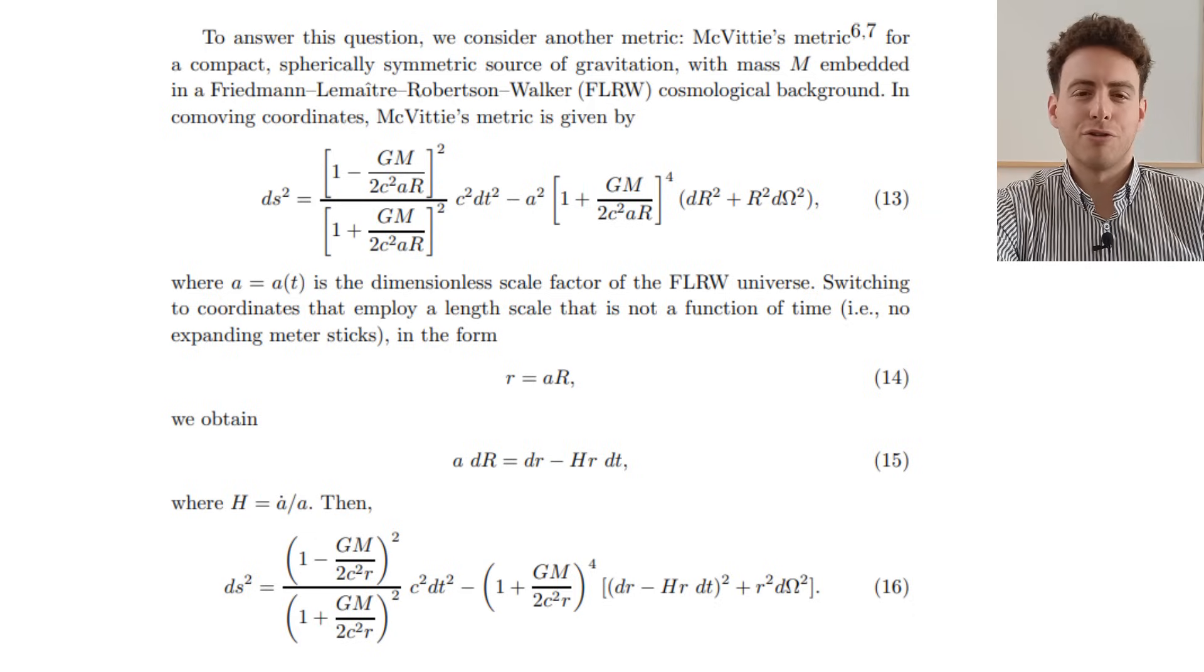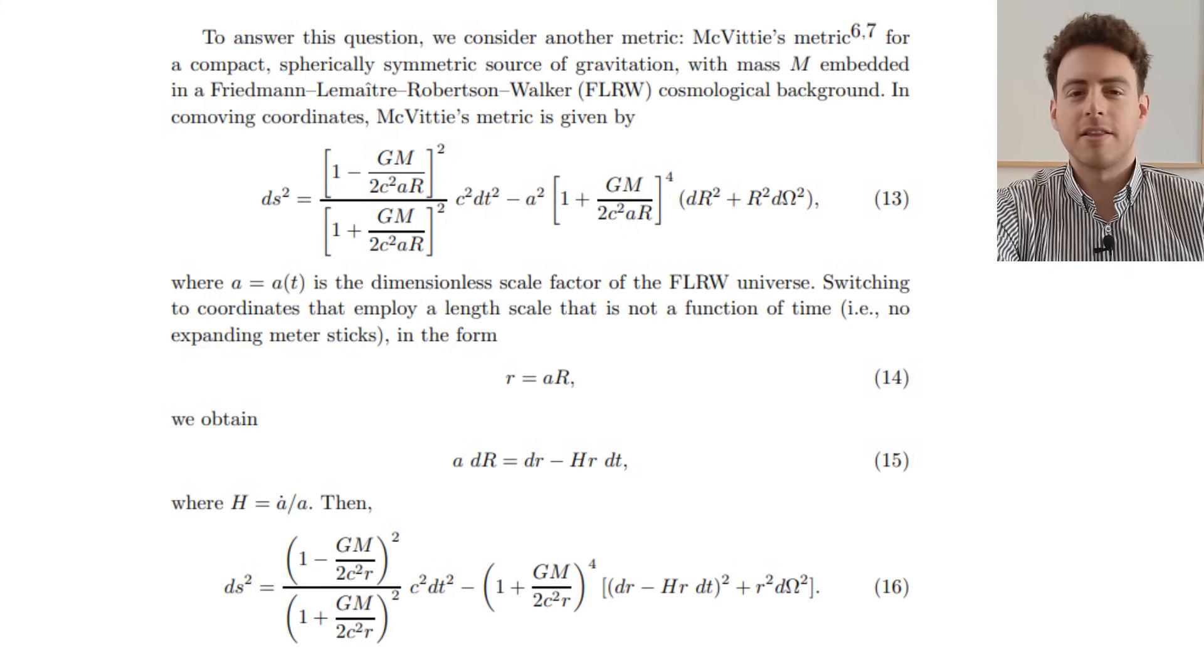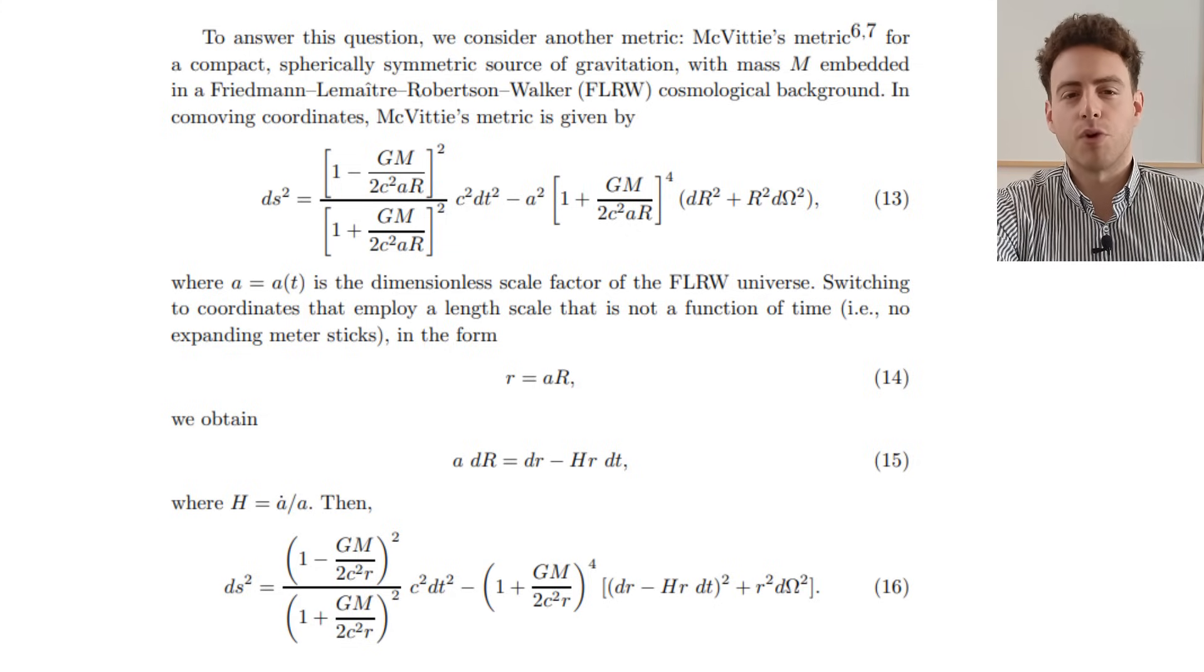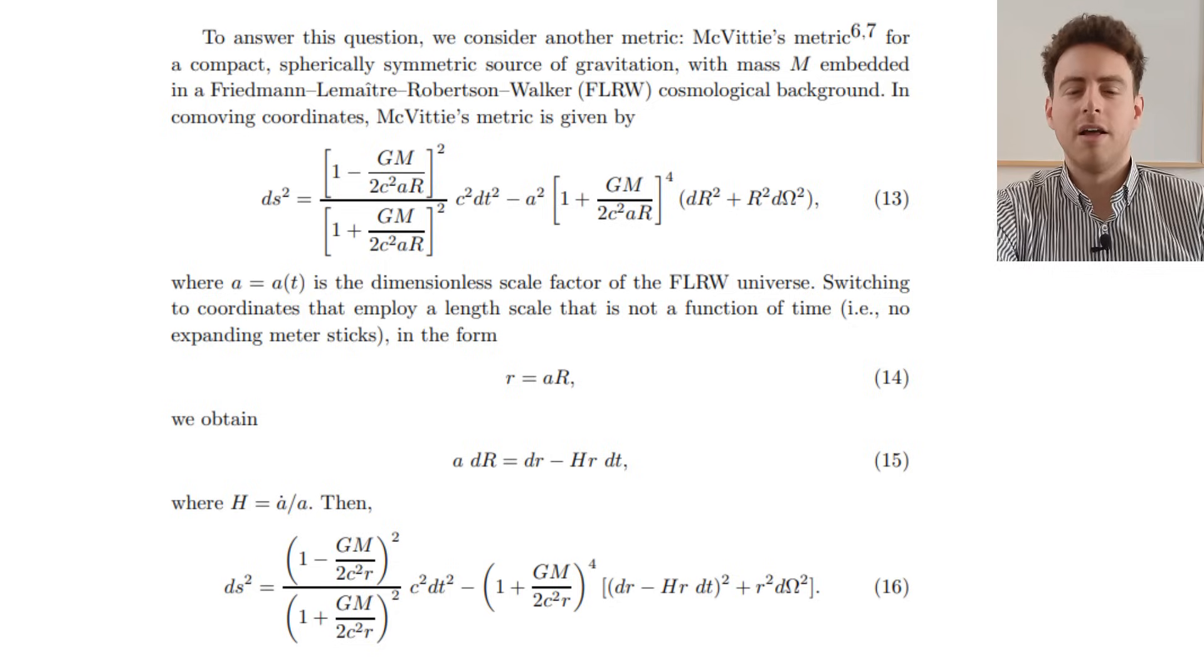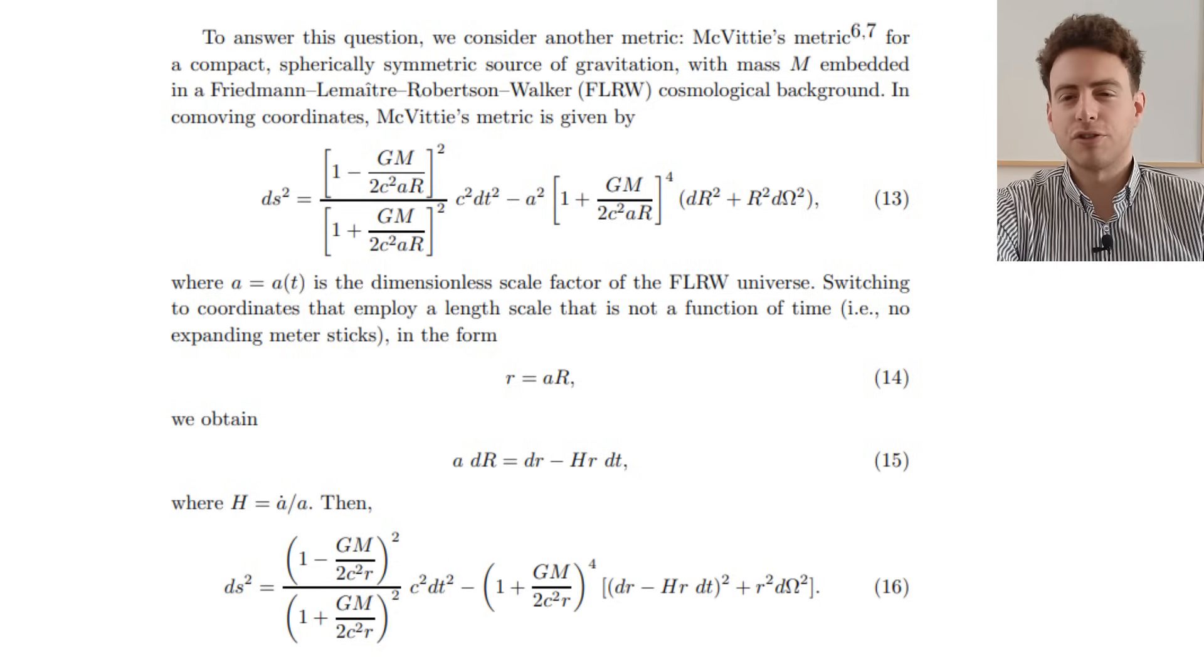Nevertheless, Victor uses McVittie's metric for a compact, spherically symmetric source of gravitation with a mass M, embedded in a Friedmann-Lemaître-Robertson-Walker cosmological background. This basically accounts for the expansion of the universe,